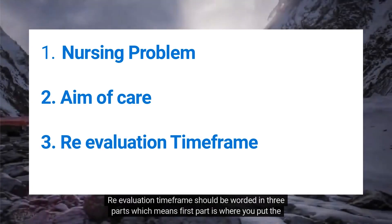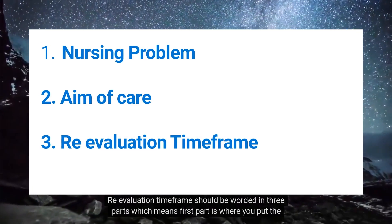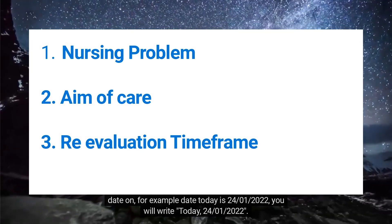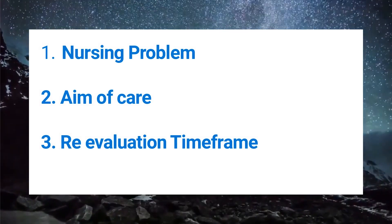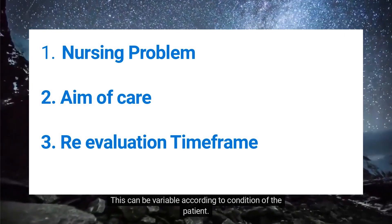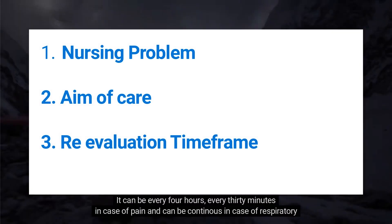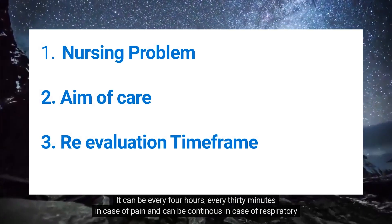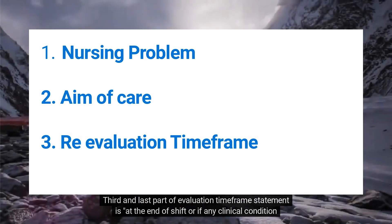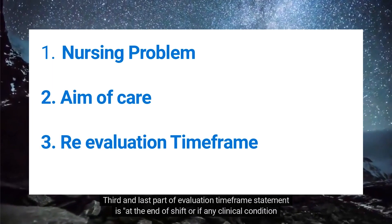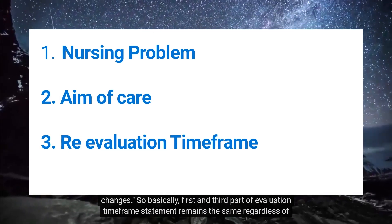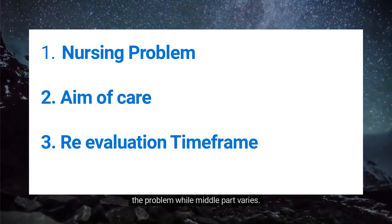The re-evaluation time frame should be worded in three parts. The first part is where you put the date — for example, today, 24th of January 2022. The second part is the time period, which can vary according to the condition of the patient: every 4 hours, every 30 minutes in case of pain, or continuous in case of respiratory distress. The third and last part is: at the end of shift, or if any clinical condition changes. The first and third parts remain the same regardless of the problem, while the middle part varies.